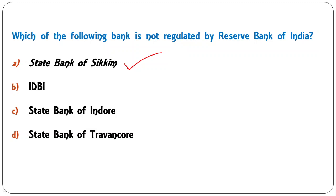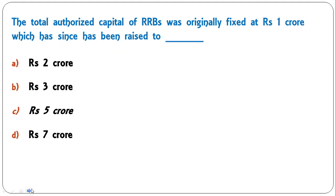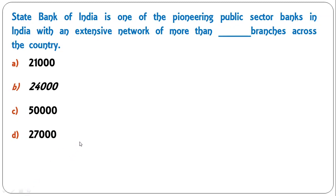The total authorized capital of RRBs was originally fixed at 1 crore rupees, which has since been raised. Options are 2 crore, 3 crore, 5 crore, or 7 crore. The correct answer is C — it has been raised to 5 crore rupees.